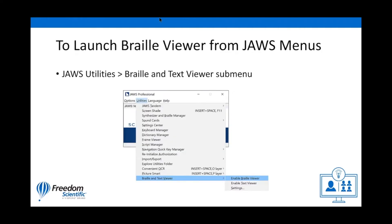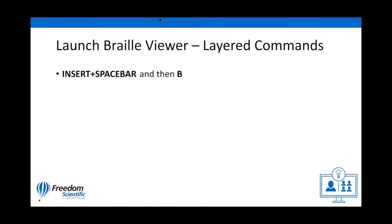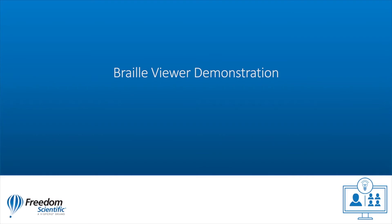To activate the Braille Viewer, do one of the following: go to the JAWS Utilities submenu, choose Braille and Text Viewer submenu, and then choose Enable Braille Viewer. Or, use the Layered command — Insert Spacebar, and then B for Bravo — to toggle the Braille Viewer on or off.